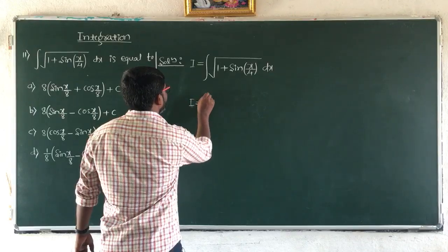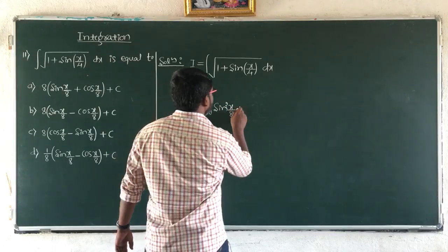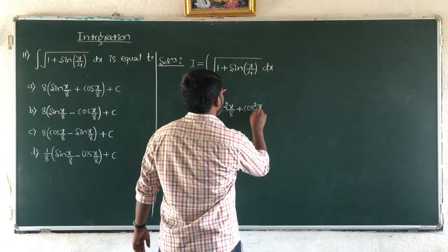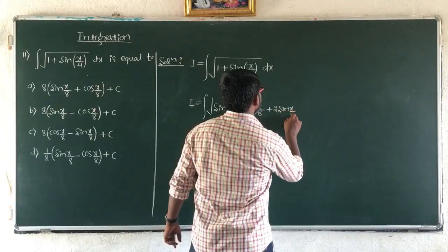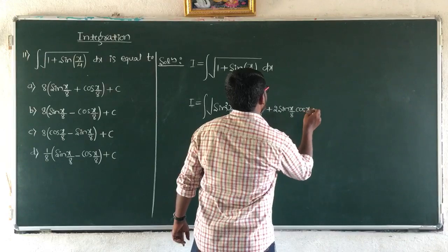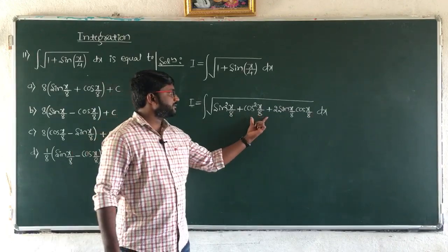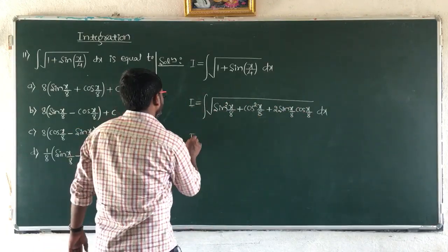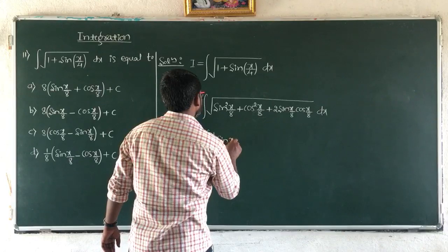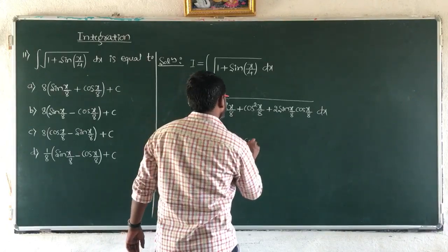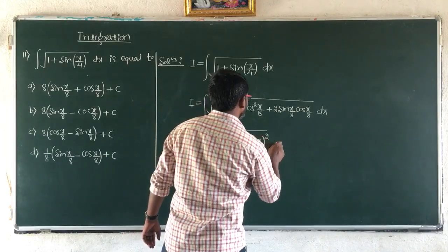So I equals integral of under root of sin²(x/8) plus cos²(x/8) plus 2·sin(x/8)·cos(x/8) dx. Now, a² plus 2ab plus b² can be written as (a+b)², so this becomes integral of under root of (sin(x/8) plus cos(x/8))² dx.